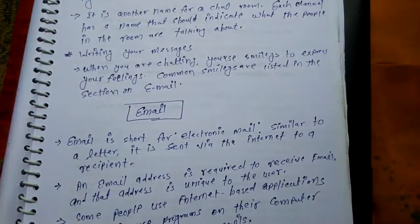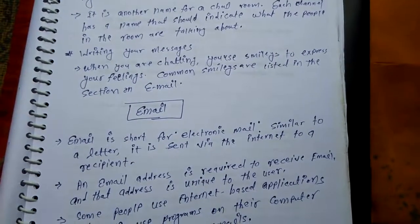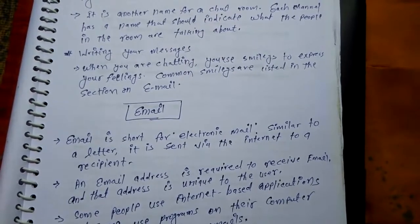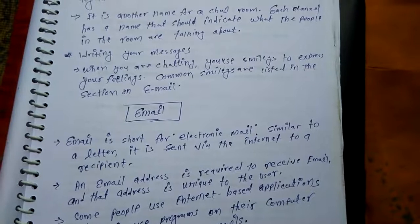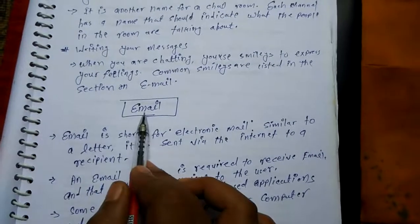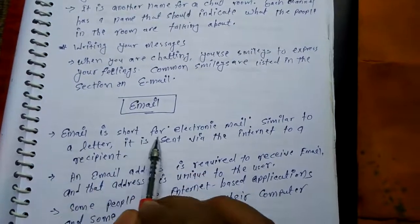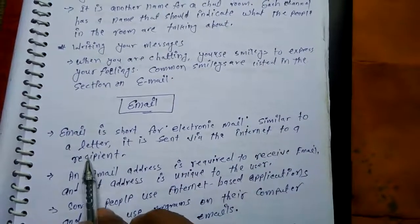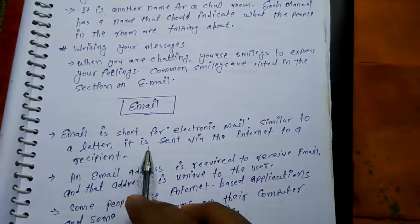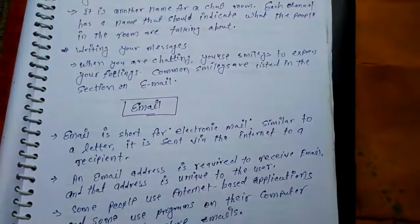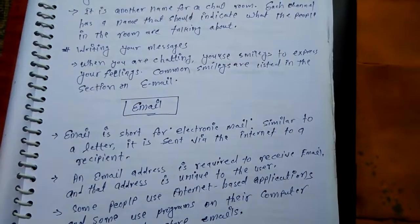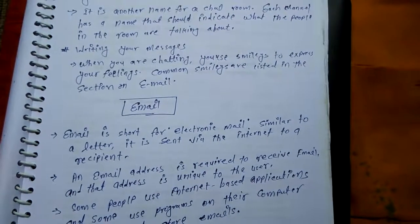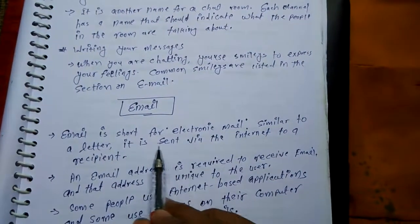Email करना है — document भी जो important documents होते हैं, तो हम email के माध्यम से कहीं भी, किसी भी country या state में जहां पर हमारे friend हों, भेज सकते हैं। Email क्या होता है — email is short for electronic mail. Short में electronic mail बोलते हैं। Letter की तरह होता है — जैसे पहले क्या होता था, email नहीं था, तो letter से post करते थे। सामने वाले destination का address लिखते थे, अपना address लिखते थे। तो letter की तरह होता है।